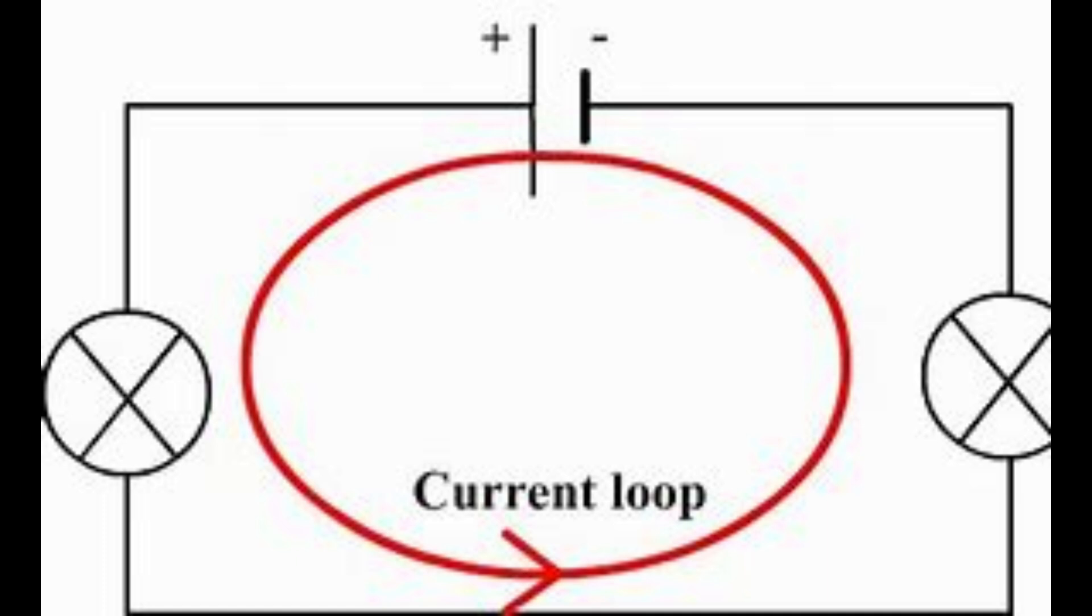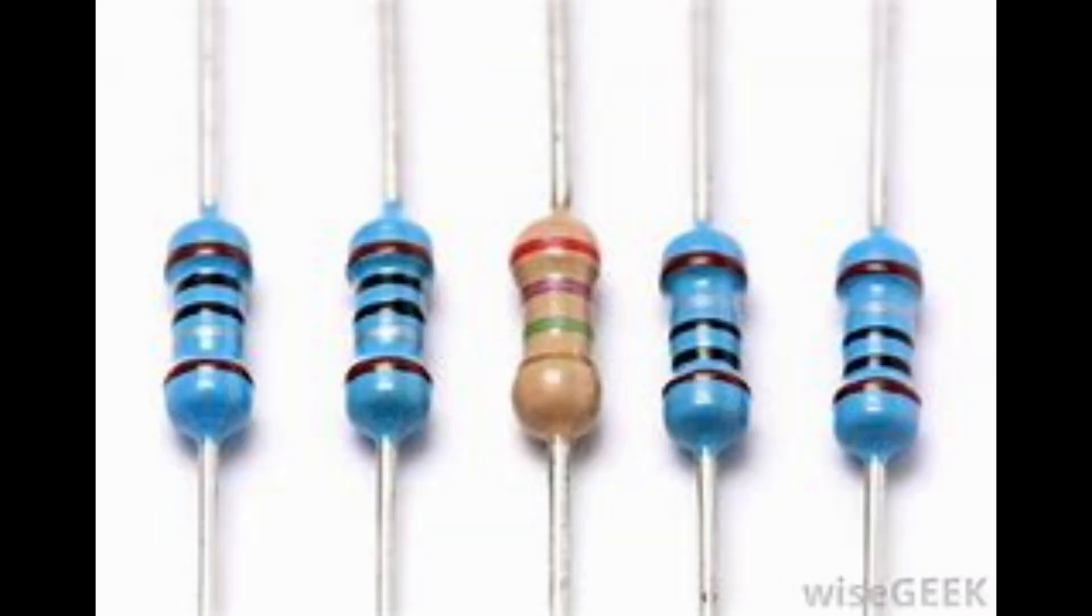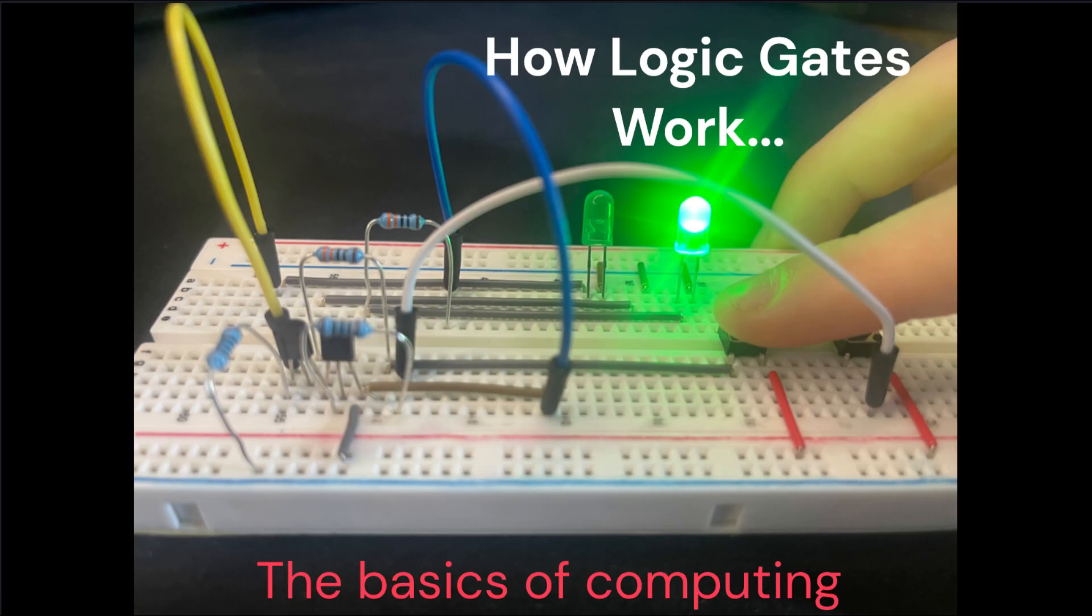So now you know how to make a simple circuit. Now you need to know how to use transistors and resistors to make a more complex circuit such as a logic gate. Watch part 1 to know what a logic gate is if you don't already, then come back to this video.